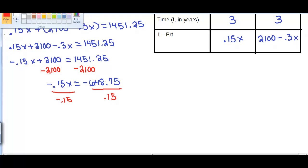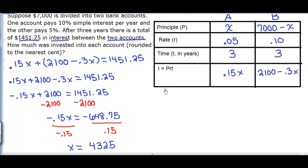Now that we've solved for X, we can go back to the original question and decide how much was invested into each account. We know from the algebra that the account that paid 5% interest, which we called A, $4,325 was invested. And the account that paid 10% interest, which we called B, was $7,000 minus account A, which is $4,325, and when you do the math, we see that account B contains $2,675. And there we've solved it.